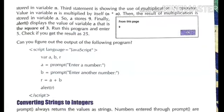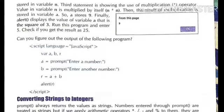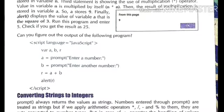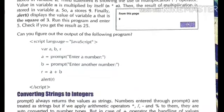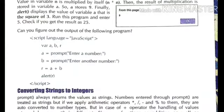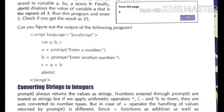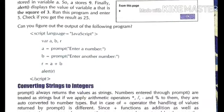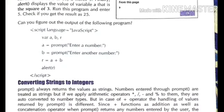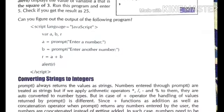Declare three variables: var a, b, r. a equals to prompt('Enter a number') — the user is asked for the first value stored in a. b is the second variable where a second value is taken from the user. Then r equals to a plus b — the result of a+b is stored in variable r. To print r, the alert function is used: alert(r), close script, close body, close HTML. In this way, two values are added and stored in a third variable r and printed.